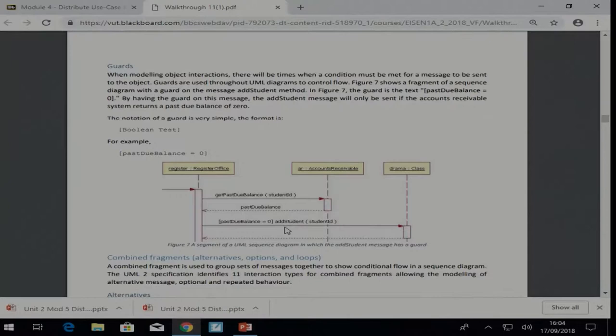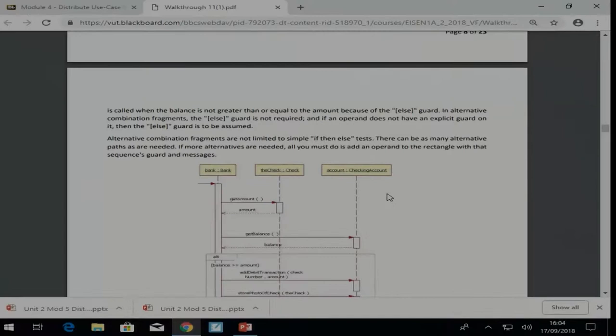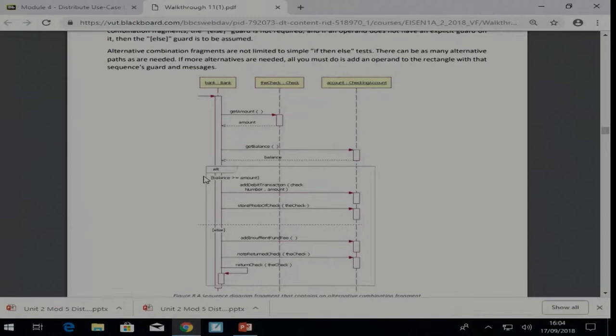Now we can also have then these fragments and frames. Now there's different frames which are available. This one is saying there's alternate, it's an alternative frame, meaning we have an option here. And almost like an if else condition. If something is going to happen, if my balance is greater than or equal to the amount, then this is happening. Otherwise the bottom portion is happening.